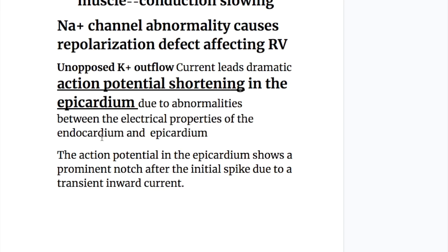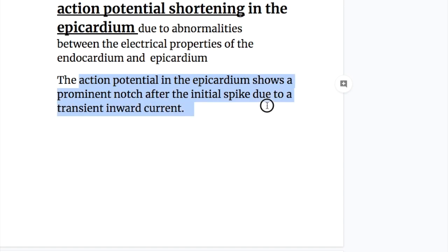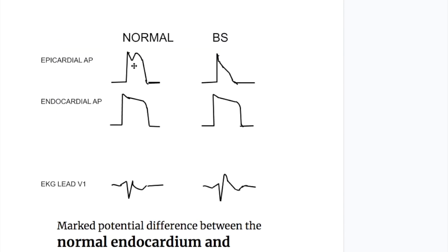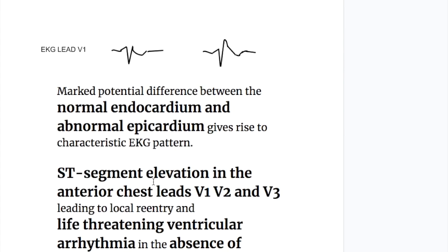Due to abnormalities between the electrical properties of the endocardium and epicardium, the action potential in the epicardium shows a prominent notch after the initial spike due to a transient inward current. This is the normal notch in the action potential after the spike in the epicardium. In Brugada syndrome, this notch is lost, and the marked potential differences between the normal endocardium and abnormal epicardium give rise to the characteristic EKG pattern.